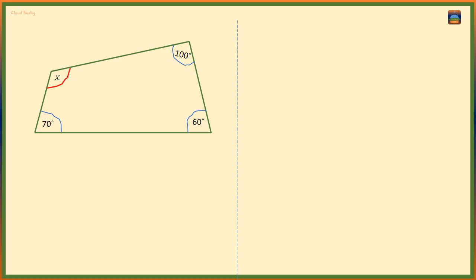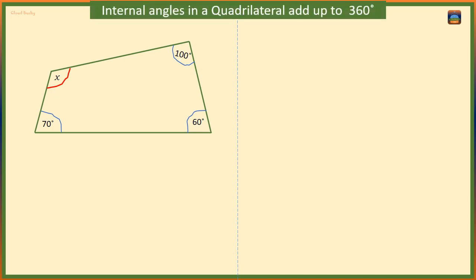We know that all the angles in a quadrilateral sum up to 360 degrees, so angle x plus 60 plus 100 plus 70 degrees must be 360 degrees. Now, 100 plus 60 plus 70 degrees is 230 degrees.